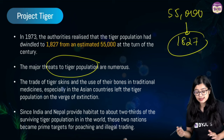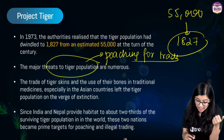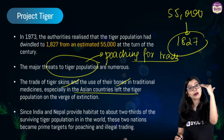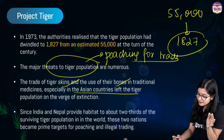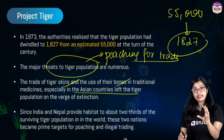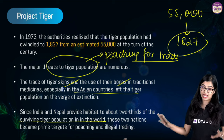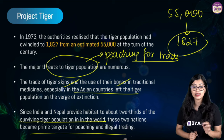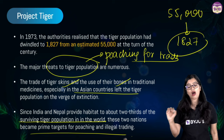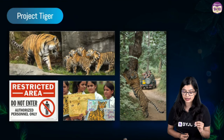The major threats to the tiger population included poaching for trade — tiger skin and bones were in great demand, especially in Asian countries — as well as growing human population leading to habitat loss. Two-thirds of the surviving tiger population was in India and Nepal, which meant serious steps had to be taken, otherwise these tigers would also become the next target of illegal hunting.